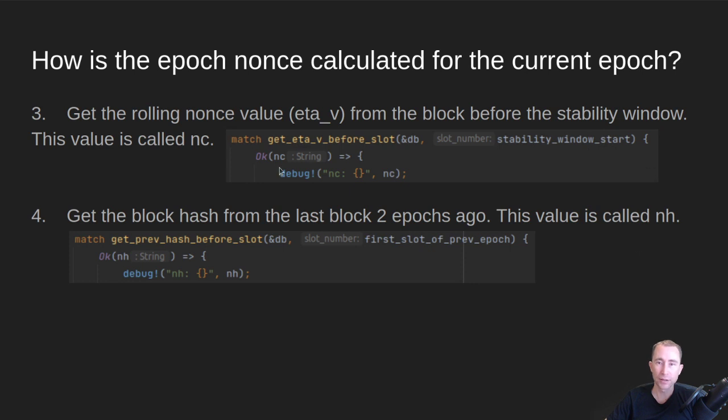Then there's another value. So that's the nc value. And then there's the nonce hash value, we call it nh. And that is where we get the hash before the first slot of the previous Epoch. And so that's the last slot of the Epoch before the previous Epoch. And those two values are used to calculate the Epoch nonce.